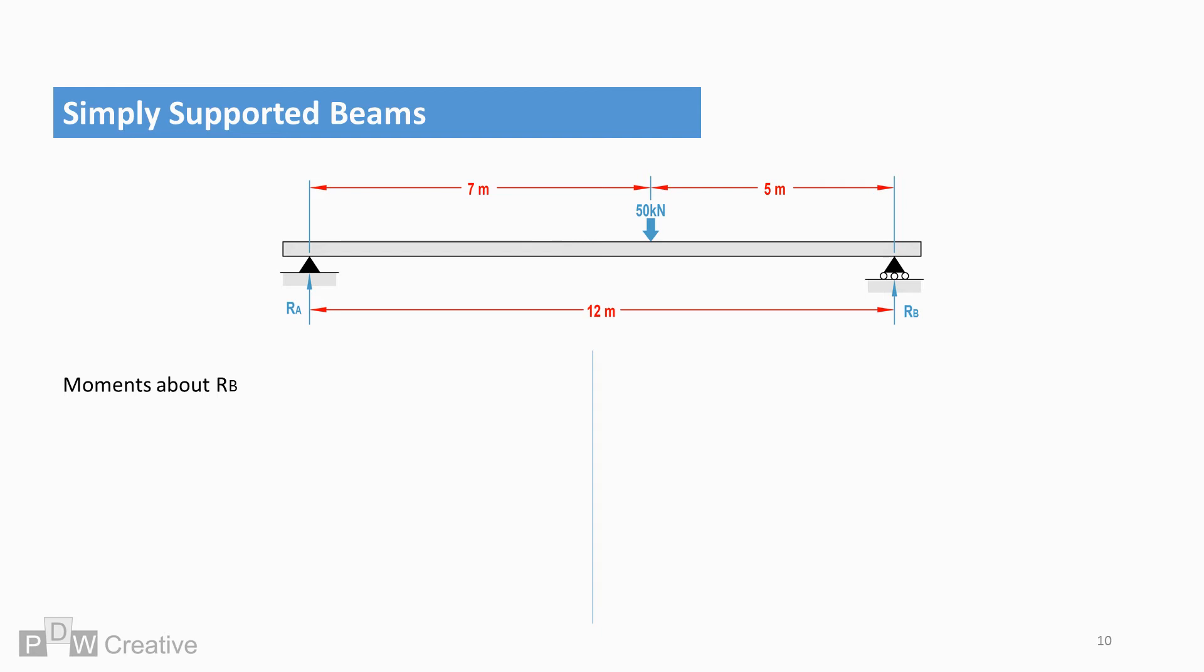We can then find RA from taking moments about RB. So 50 times 5 equals RA times 12. And finally, we can calculate RA.